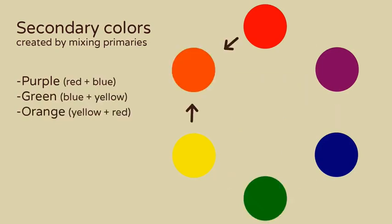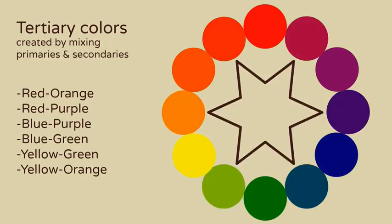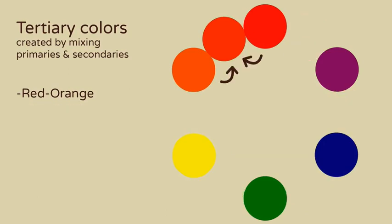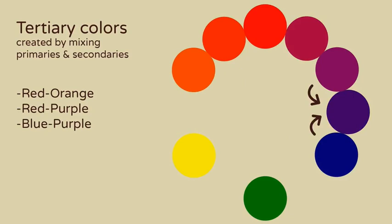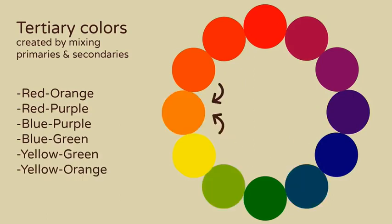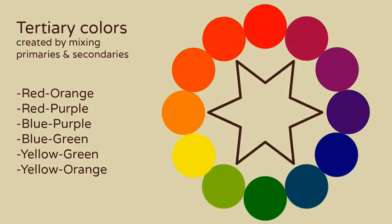Tertiary colors are created by mixing a primary color with a secondary color. These are red-orange, red-purple, blue-purple, blue-green, yellow-green, and yellow-orange. And now we have our basic color wheel.